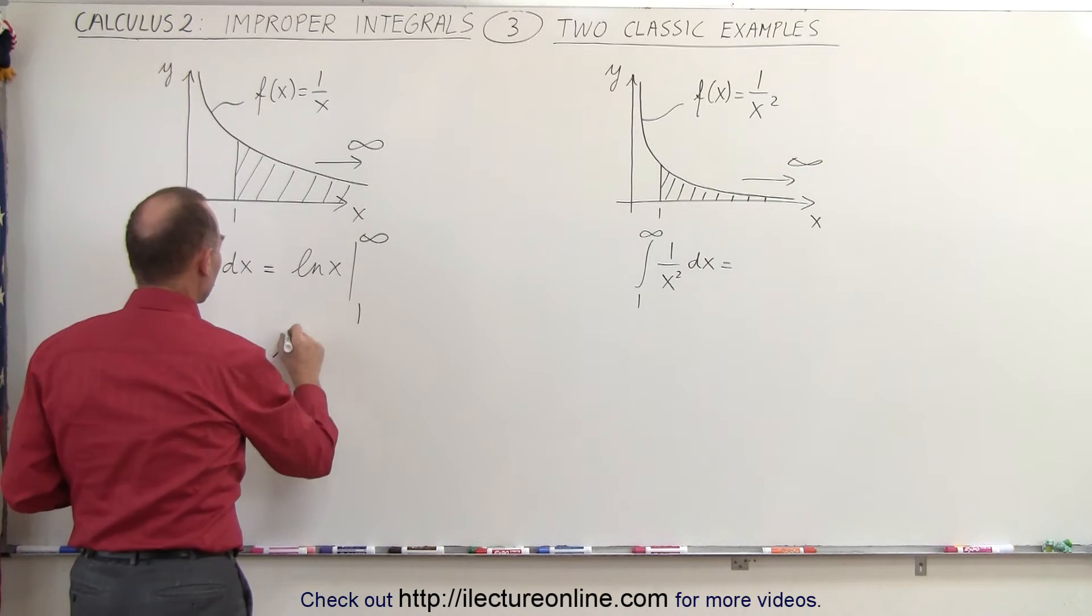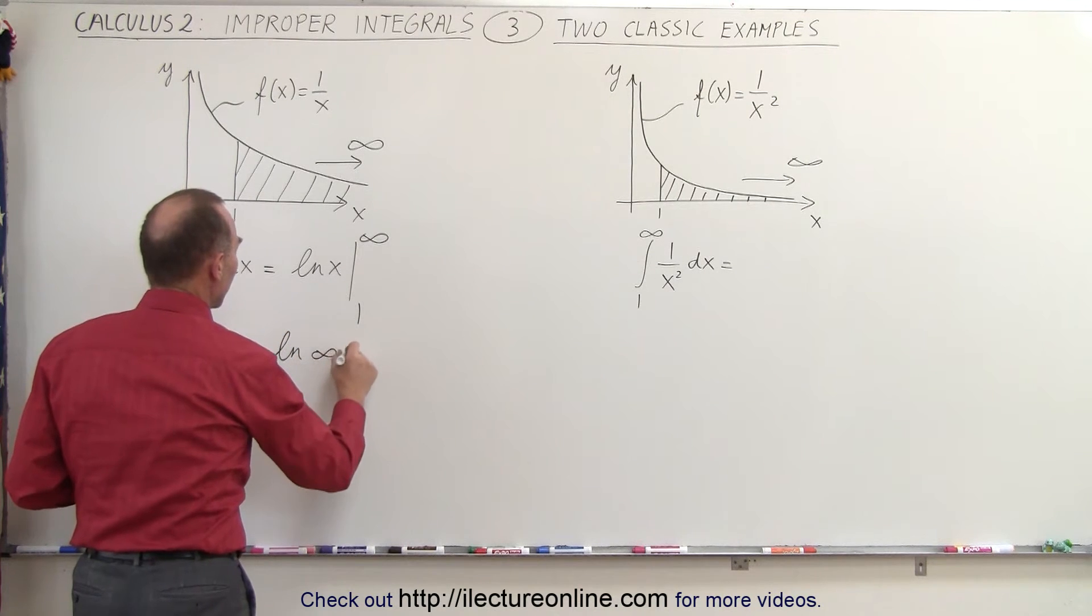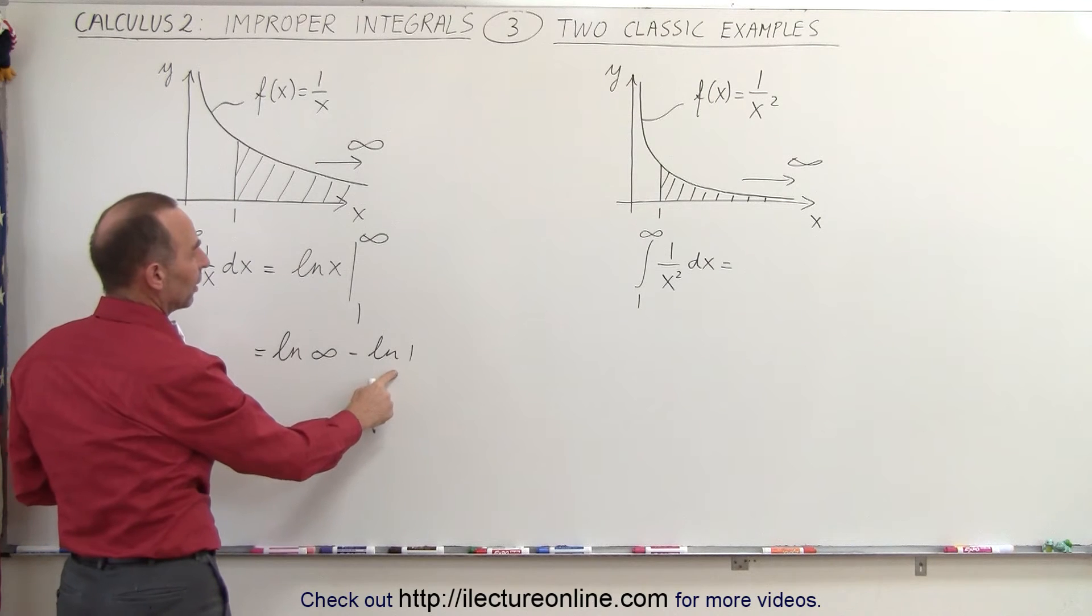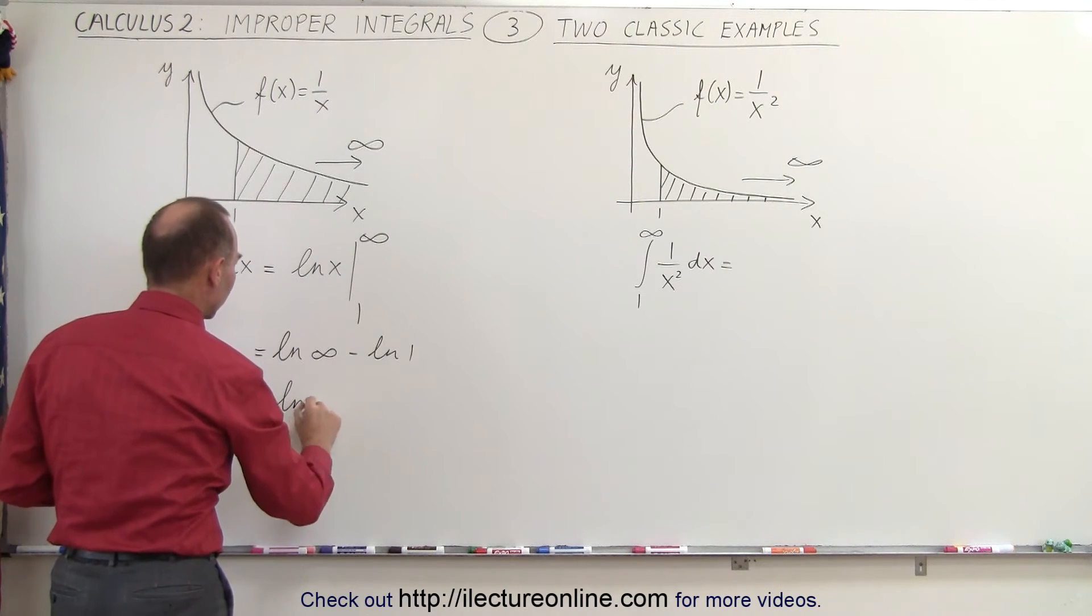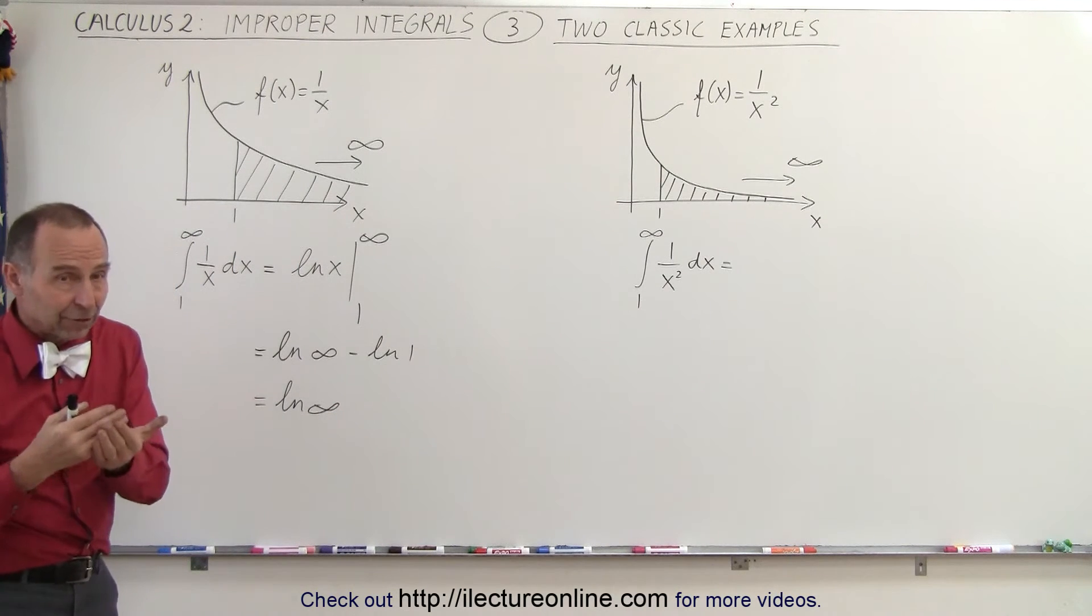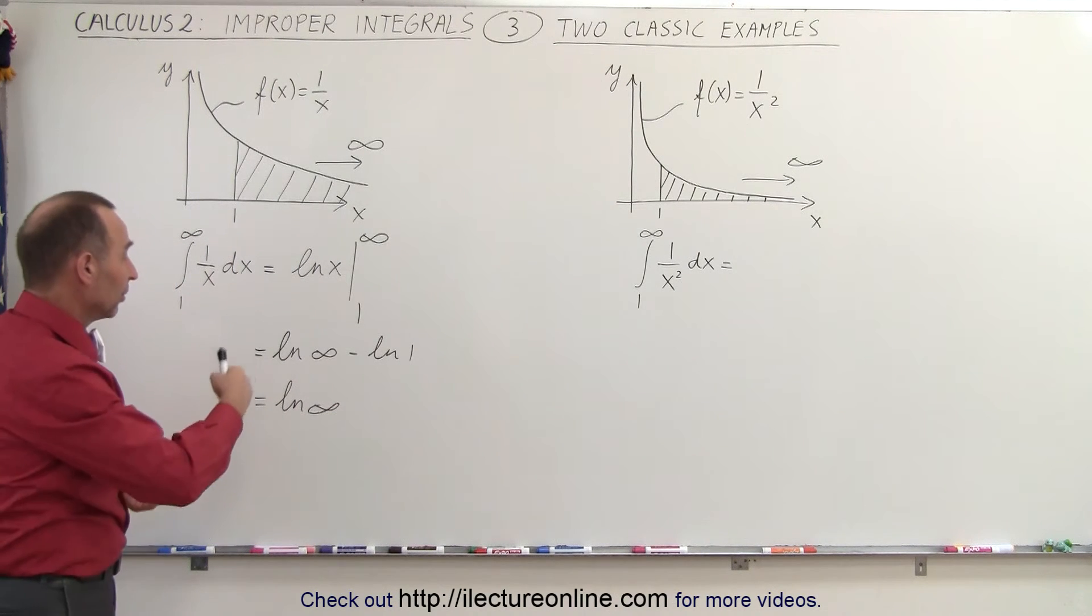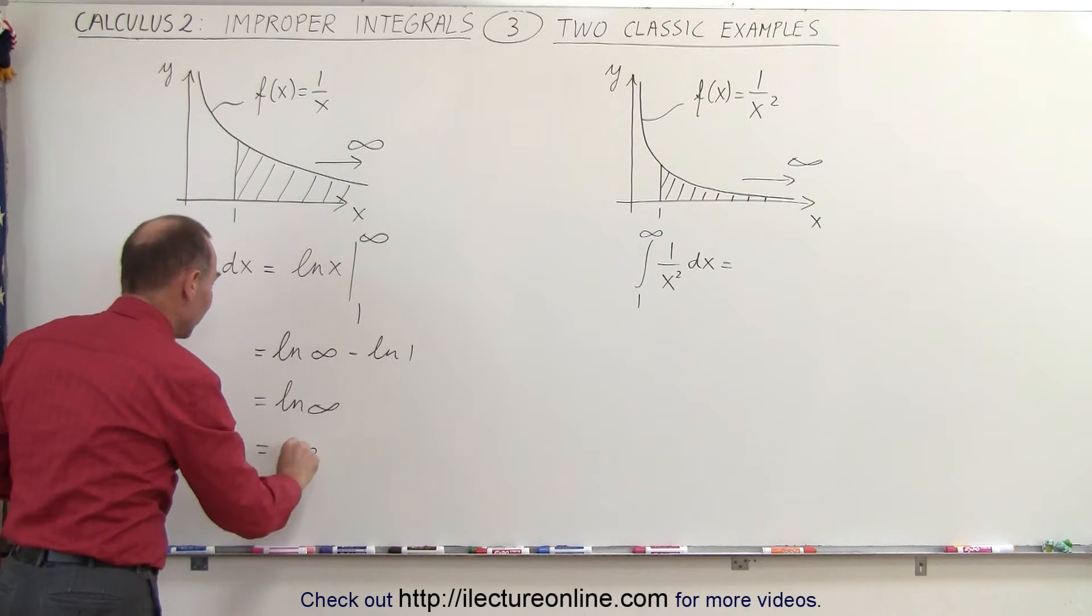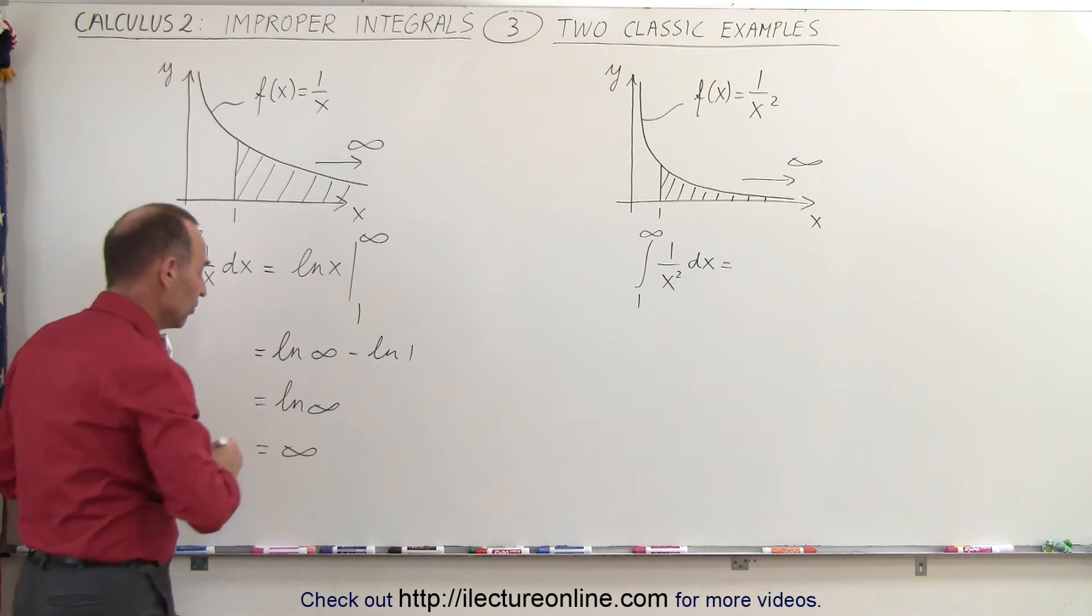This is equal to the natural log of infinity minus the natural log of 1. Of course, the natural log of 1 is equal to 0, so this is equal to the natural log of infinity. And the natural log of infinity, well, that never converges to a single number. The natural log of infinity is indeed equal to infinity and therefore it does not converge.